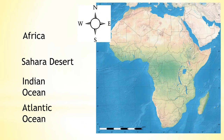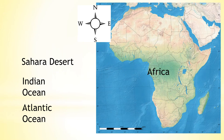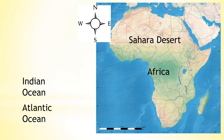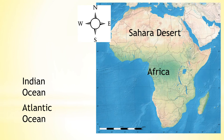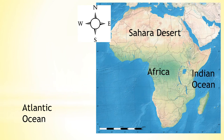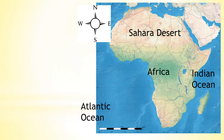Let's label this map. Africa is the name of the continent. The Sahara Desert covers a large area of Northern Africa. The Indian Ocean is to the east of Africa and the Atlantic Ocean is to the west.